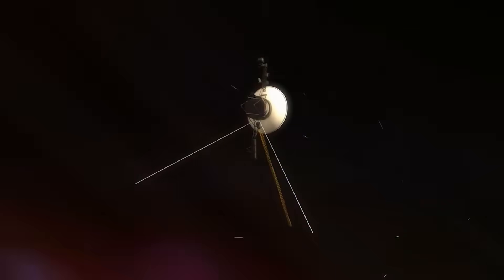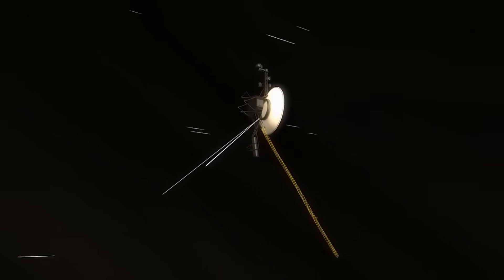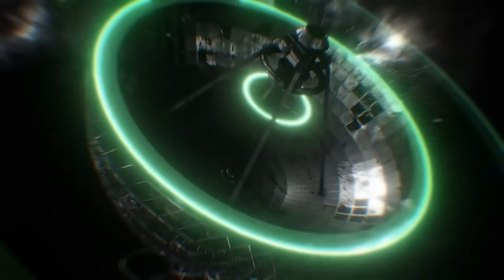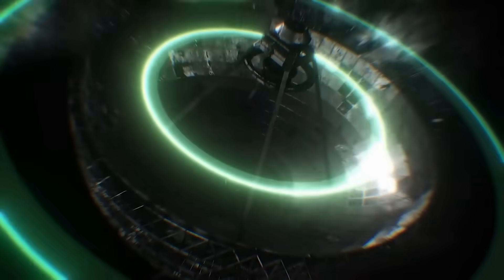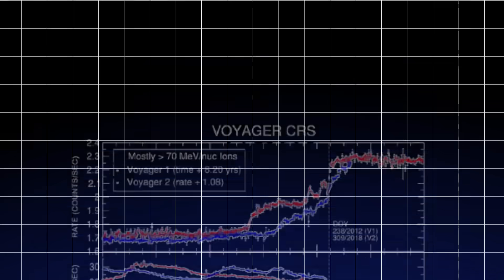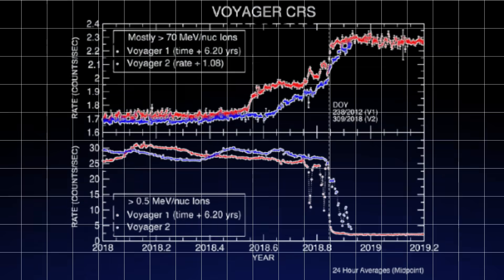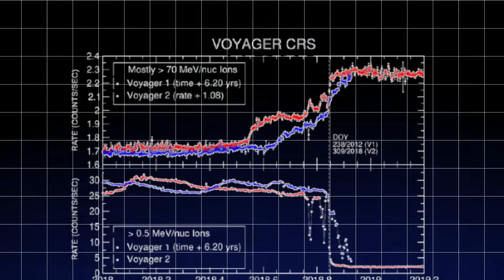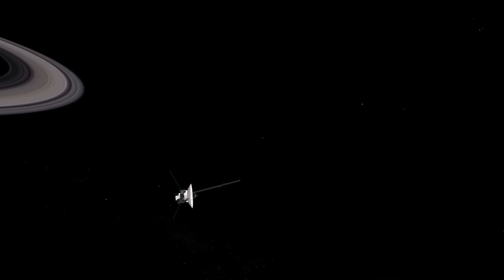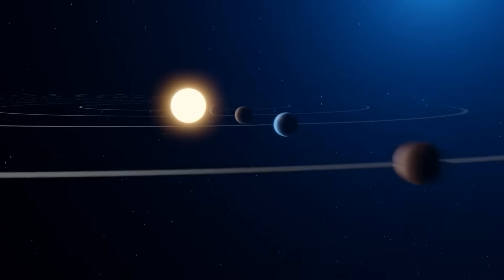What truly unsettled the engineering and scientific teams wasn't the shutdown itself. After all, Voyager 2 had long outlived its expected operational life. What rattled them was what came immediately before the end. Embedded in the transmission was a frequency drift that did not match any known cosmic interference. It was artificial. Intelligent, even.